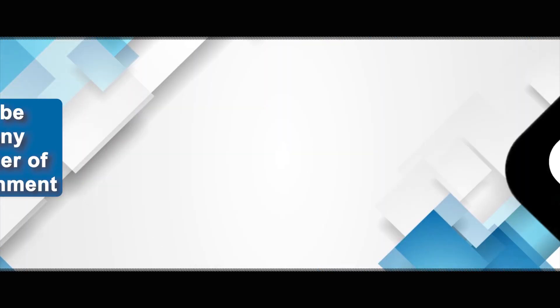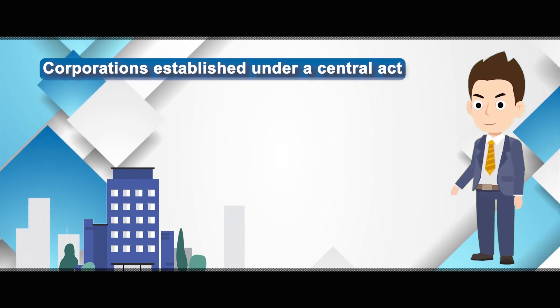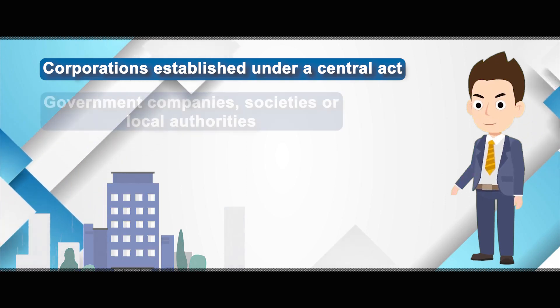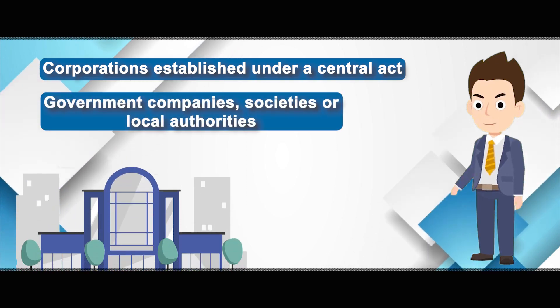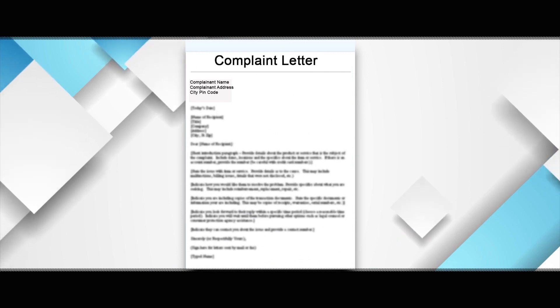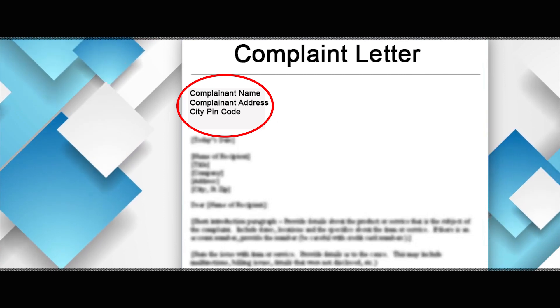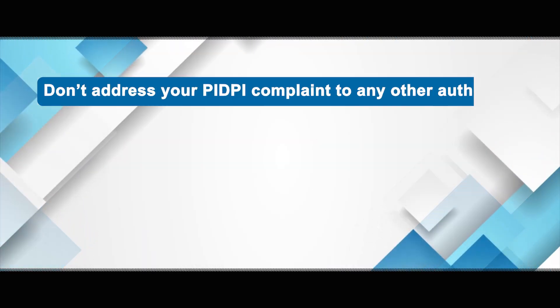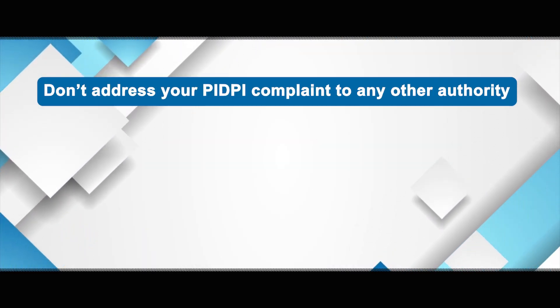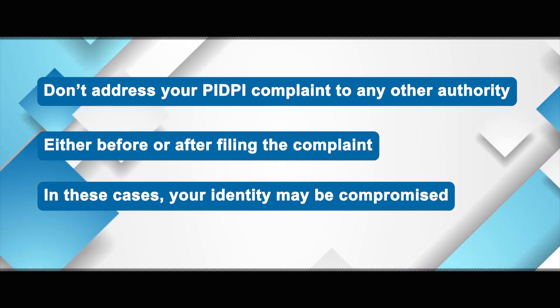Remember these important points. PIDP complaints can be made against any officer or employee of the central government. Complaints can also be made against employees of any corporations established under a central act, or against employees of government companies, societies or local authorities which are under the central government. While making a complaint under PIDP, a complainant must give his or her name and address at the beginning or end of the complaint letter or in an attached letter. Please do not address your PIDP complaint to any other authority either before or after filing the complaint, as in these cases your identity may be compromised.